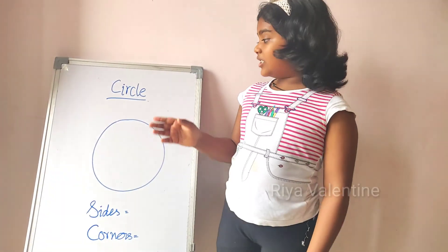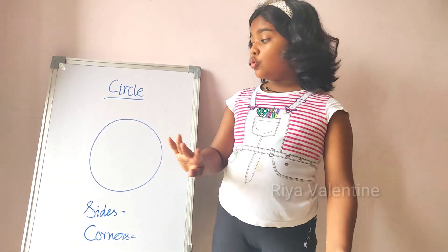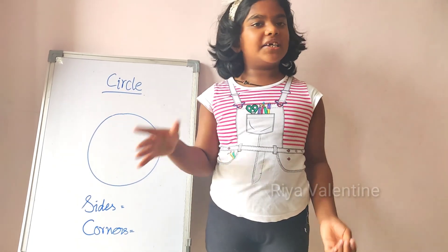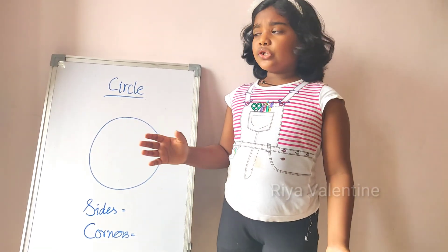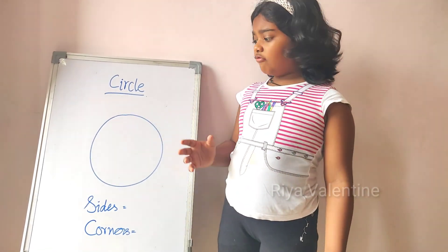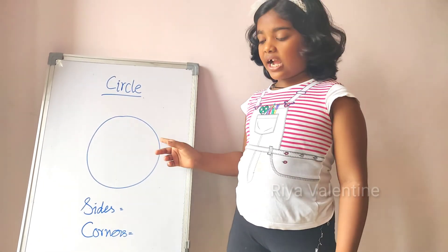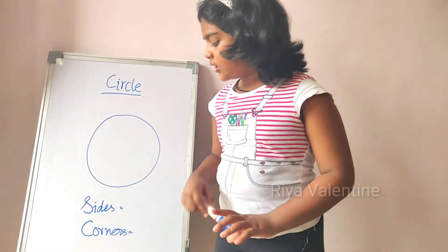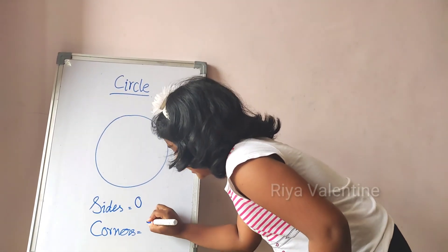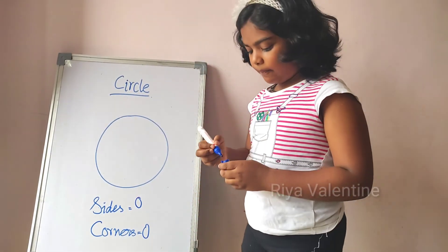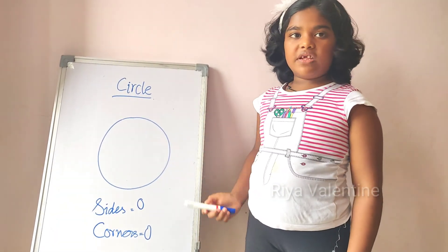So let's move on to the circle. Circle has no sides and no corners — that is the speciality of the circle. Count with me: how many sides and how many corners? Zero sides and zero corners. That is the speciality of the circle.